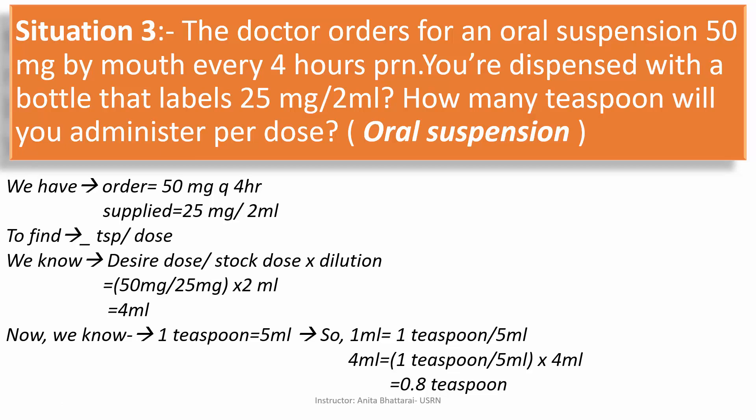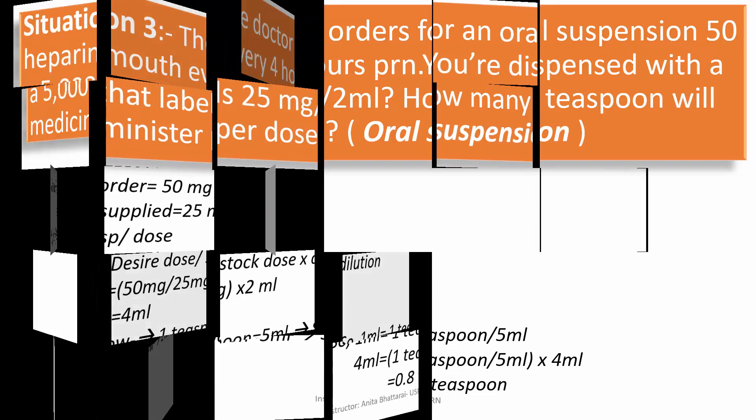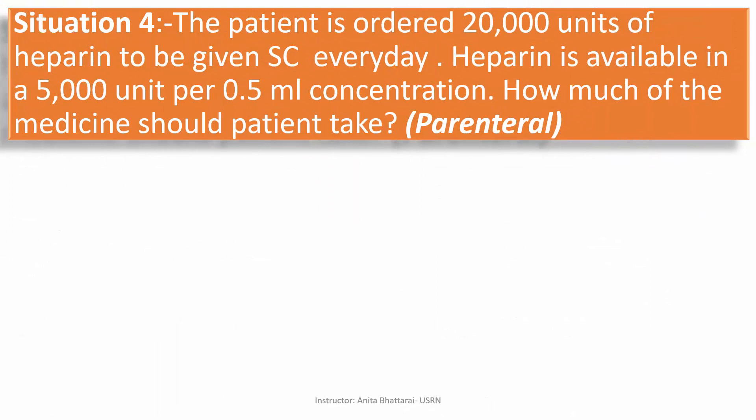Now let's see the next situation. In situation 4, the patient is ordered 20,000 units of heparin to be given subcutaneously. Heparin is available in a 5,000 units per 0.5 ml concentration. How much of the medication should the patient receive? Let's solve this problem.